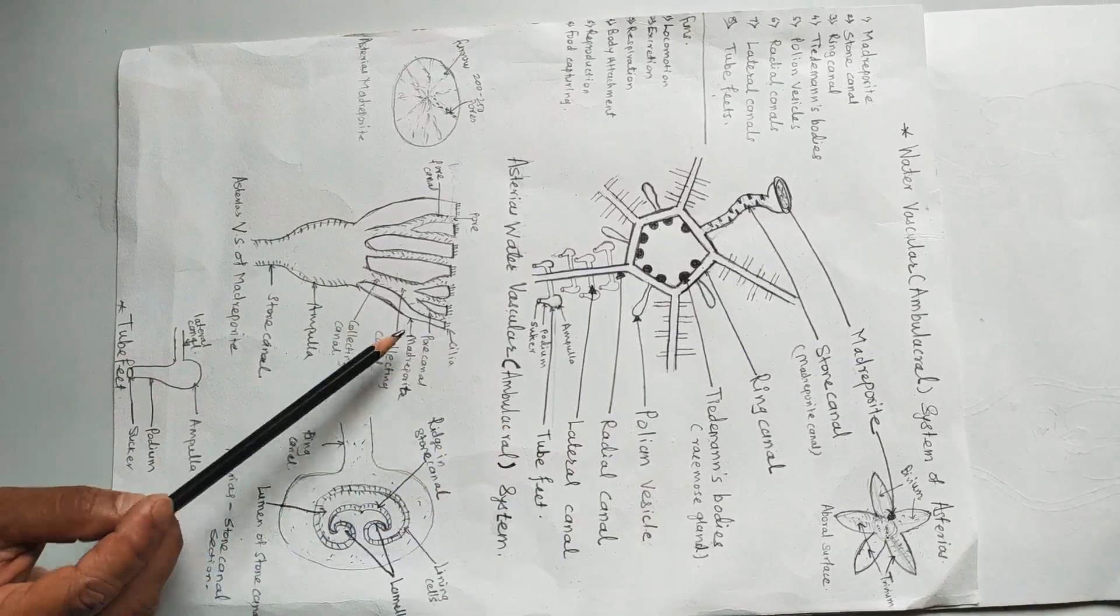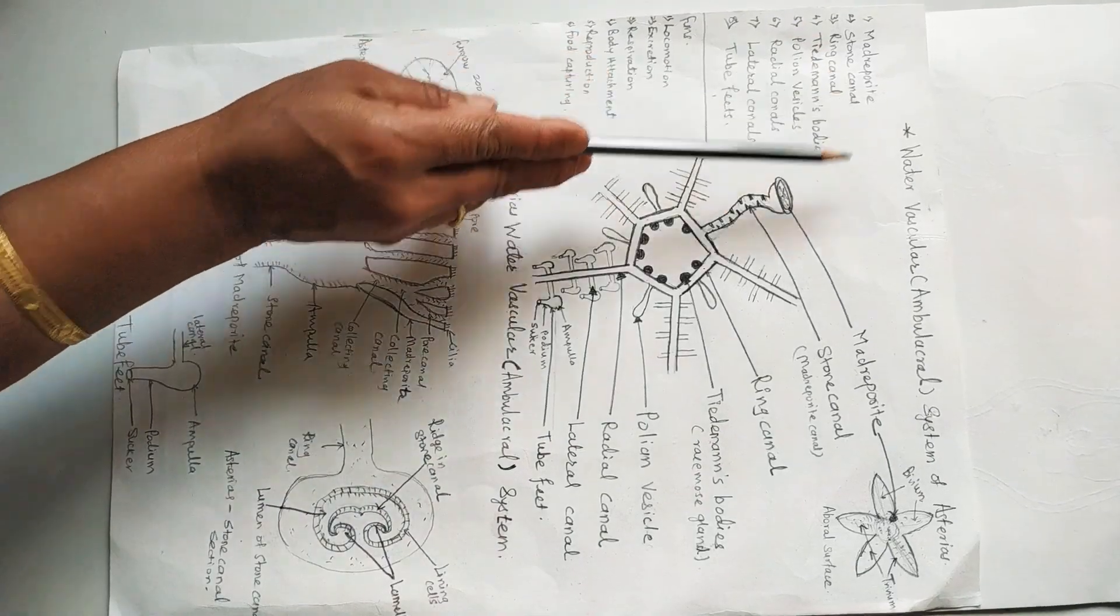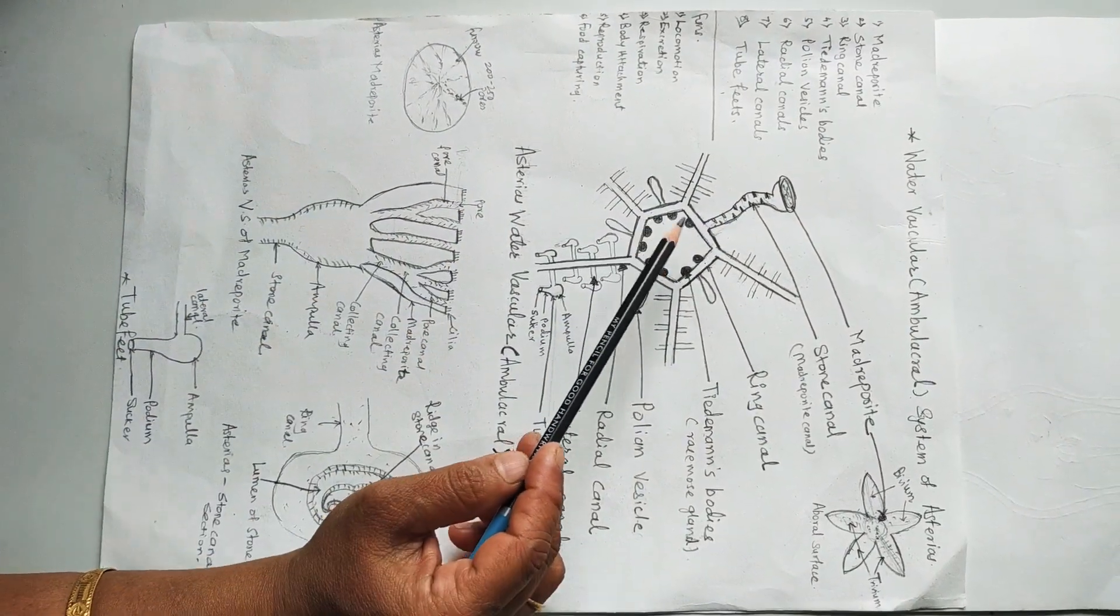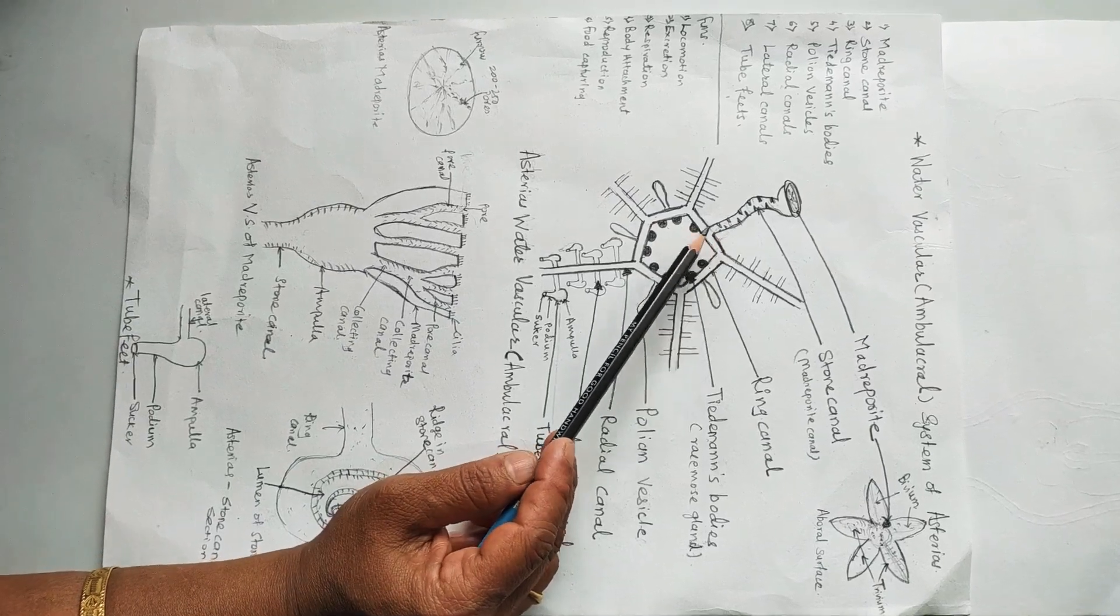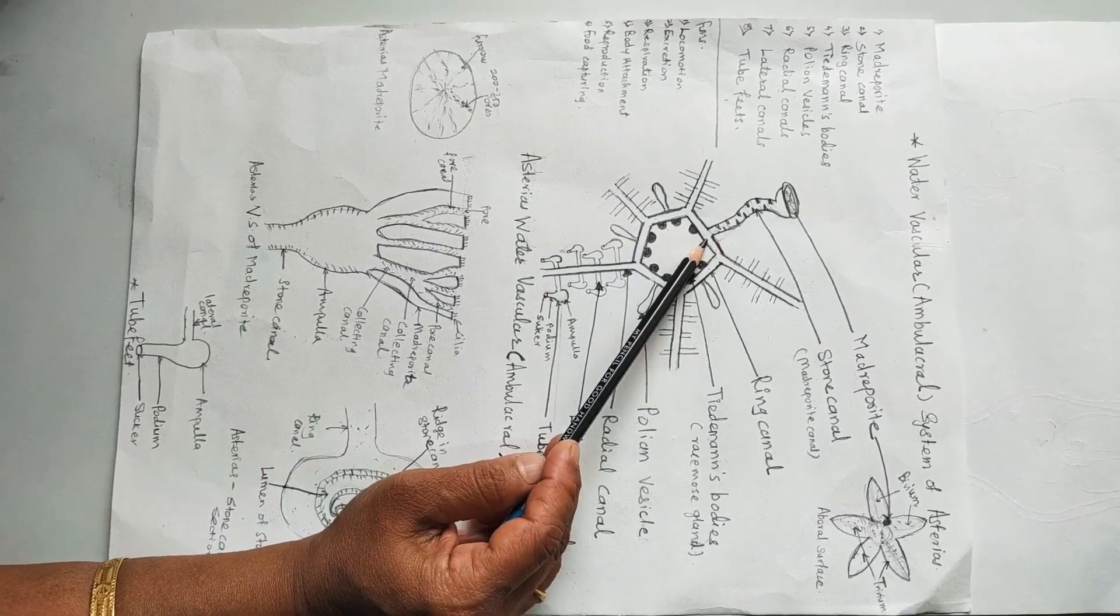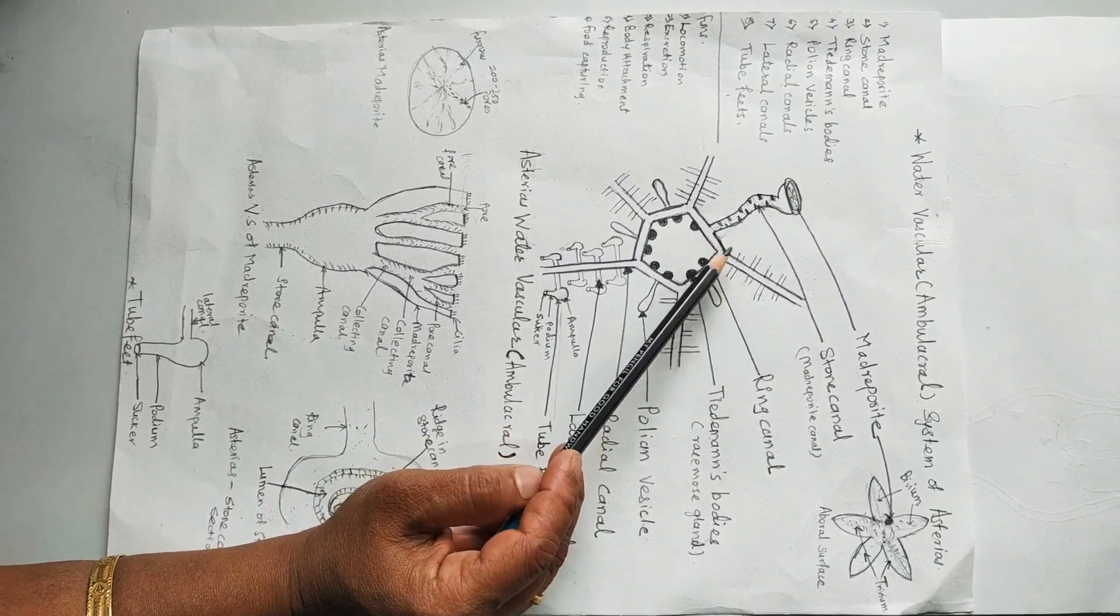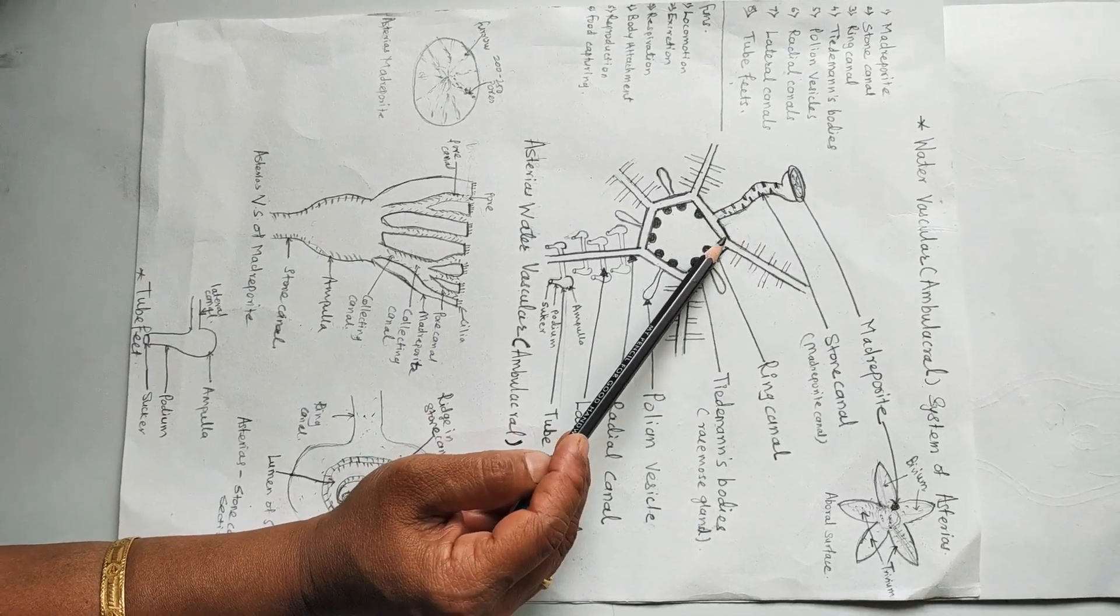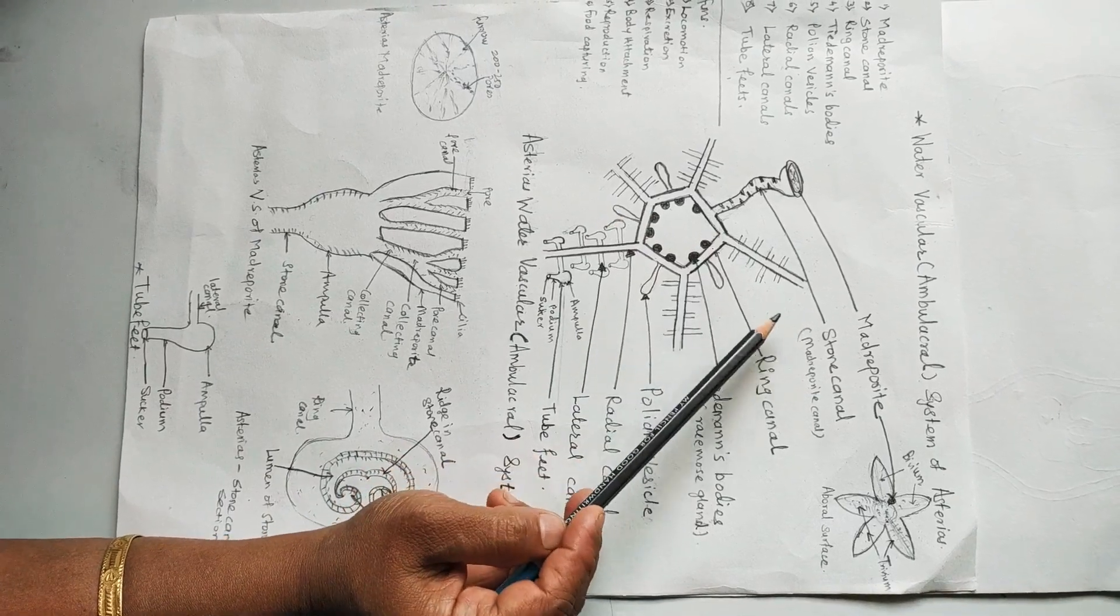Next part after madreporite is the stone canal. Stone canal opens vertically into the ring canal. It is supported by a series of calcareous ridges. Hence, it is called the stone canal.